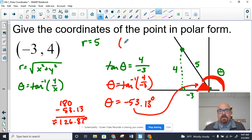So the correct coordinates for this point are 5 comma, and we'll call it 126.9, rounded to the tenths place. So picture is extremely important.